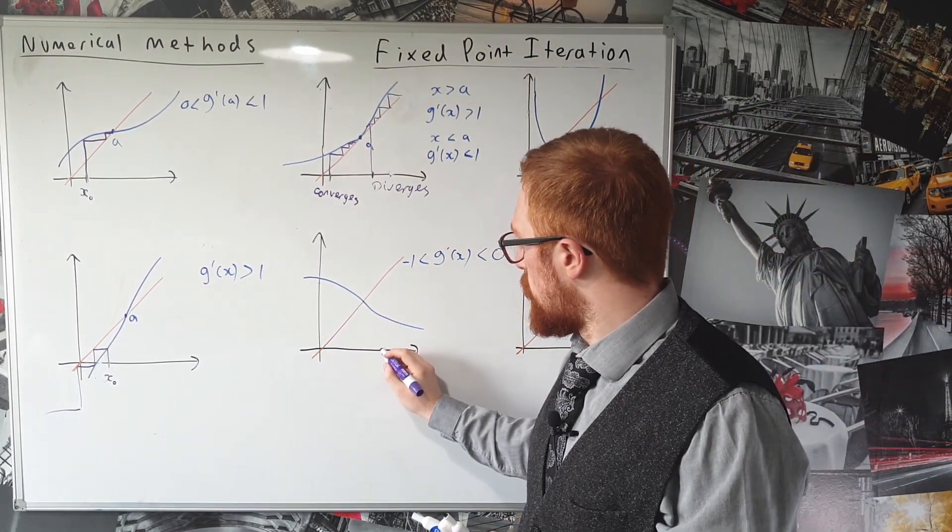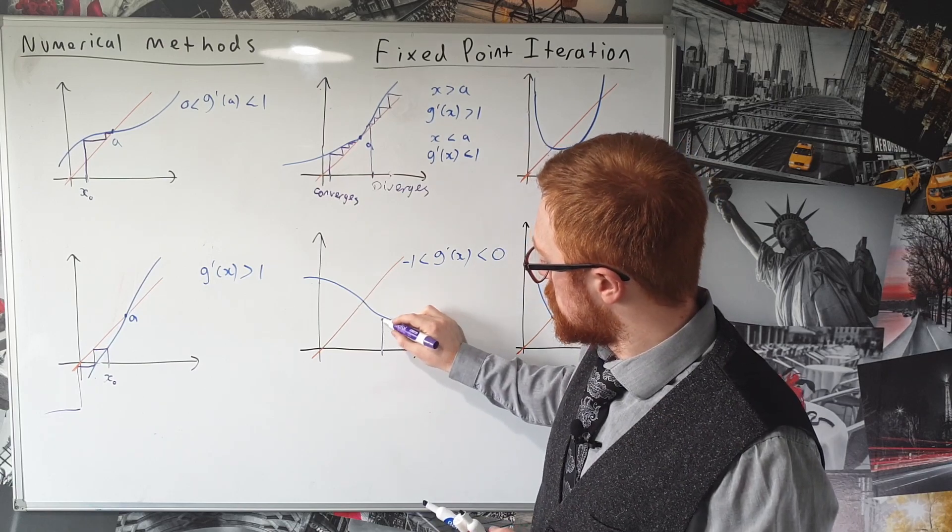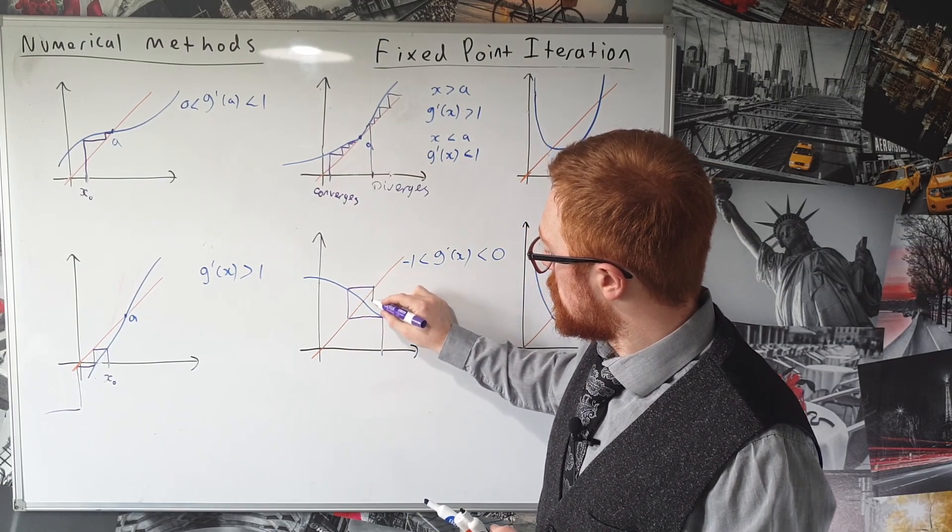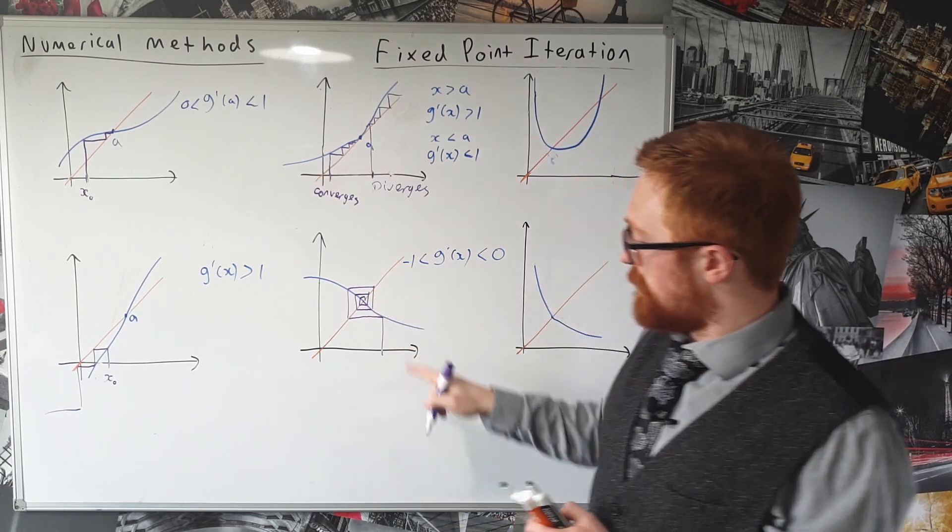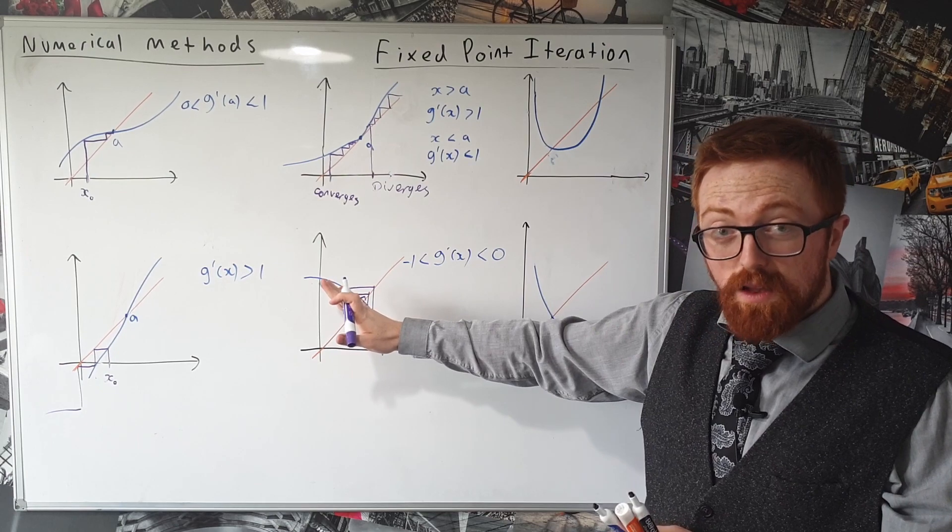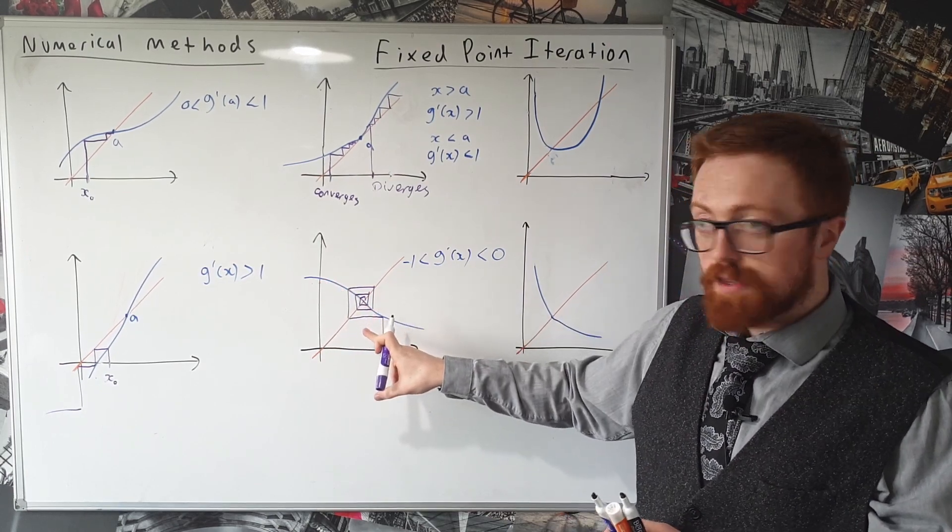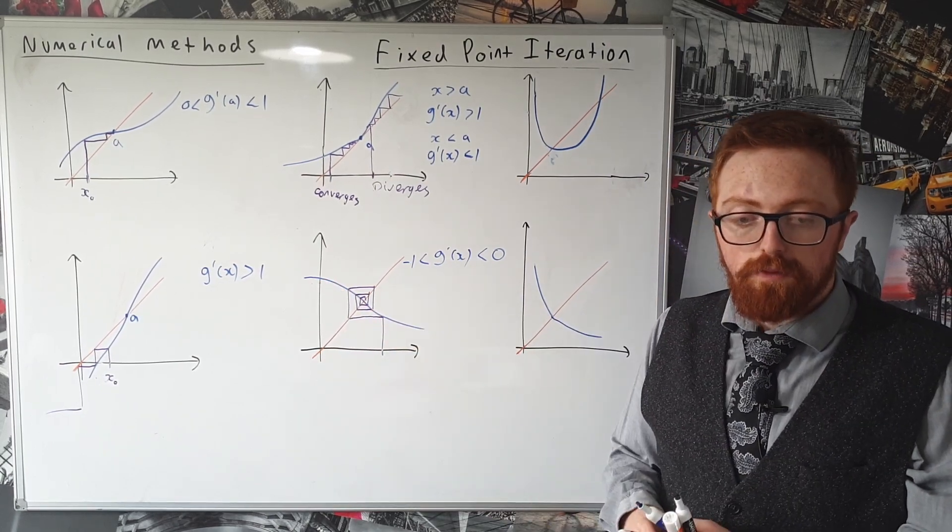So let's look what happens if we pick as x-nought. There we go. And this gradient here looks like it's quite close to negative one, so it's going to converge quite slowly, but if we follow it round, eventually it will converge.